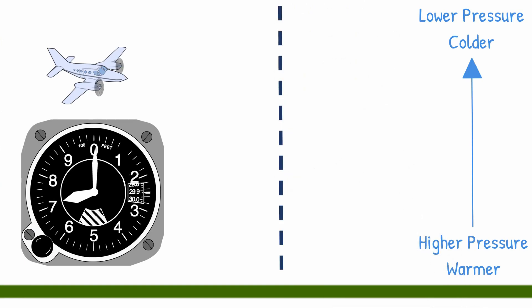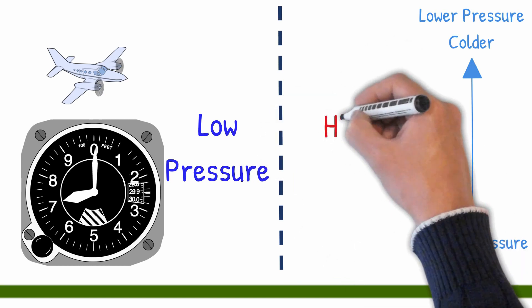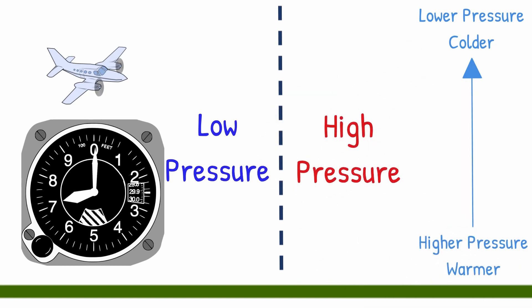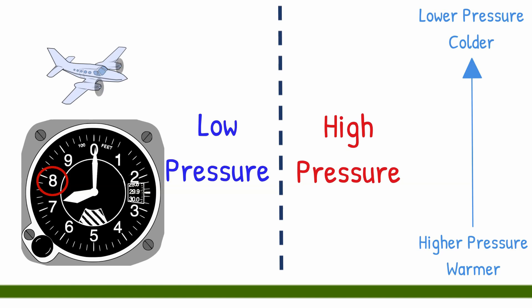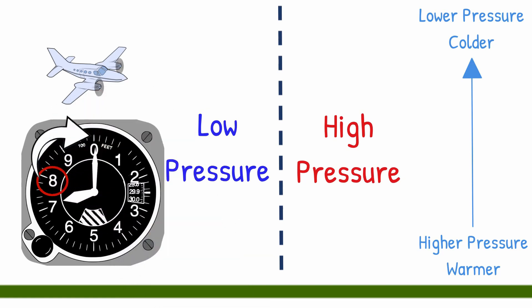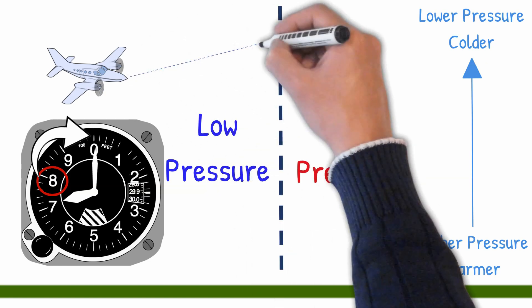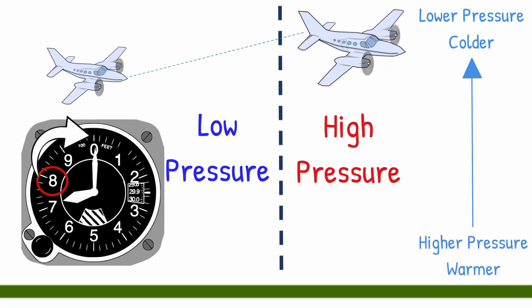Now, imagine the aircraft is flying from low pressure to higher pressure. Without adjusting the altimeter setting, since higher pressure is lower, the altimeter thinks that it's descending. If the pilot did nothing, the altimeter would display a lower altitude — say 6,800 feet. Slowly, the pilot will climb to maintain the same indicated altitude of 7,000 feet. Without changing the altimeter setting to adjust for this difference in air pressure, the pilot would gradually climb to maintain an indicated altitude of 7,000 feet. This would mean the pilot is now flying 200 feet higher than desired. The aircraft's true altitude — the altitude above mean sea level — will be higher than indicated.